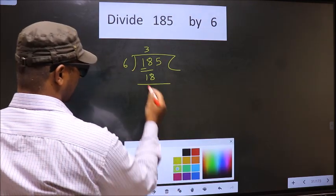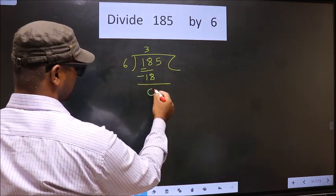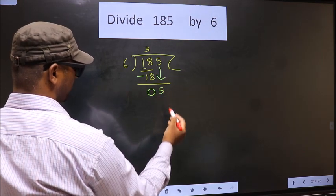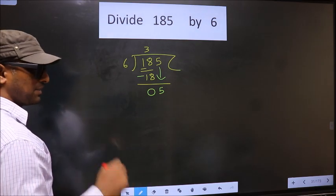Now you subtract. 18 minus 18, 0. Now you bring down the beside number down that is 5. This is where the mistake happens.